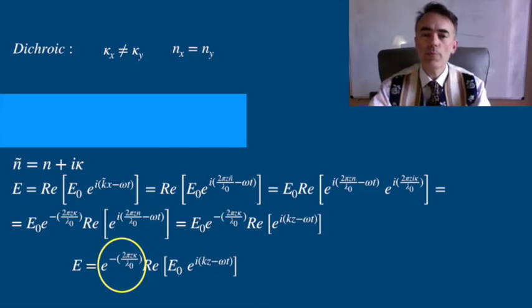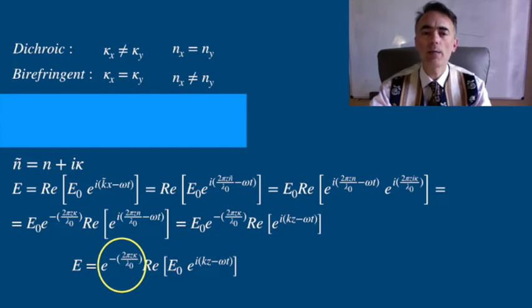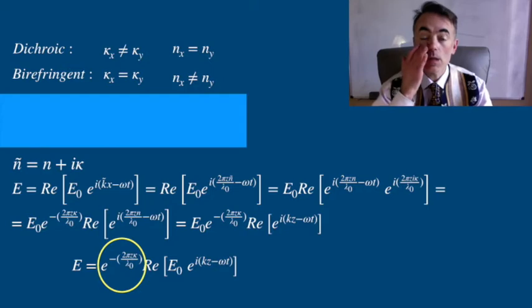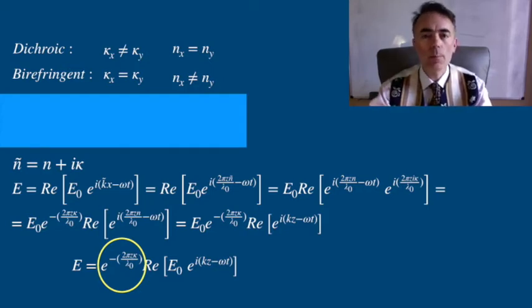But we can also have materials for which kappa x equals kappa y, so that the absorption is isotropic, but nx is not equal to ny. This means that light polarized in different directions will move at different speeds inside of the medium.